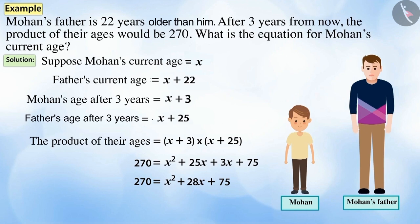We see that on the right-hand side, we have a quadratic polynomial and on the left-hand side, we have a constant. Let's write the obtained quadratic equation in the standard form.